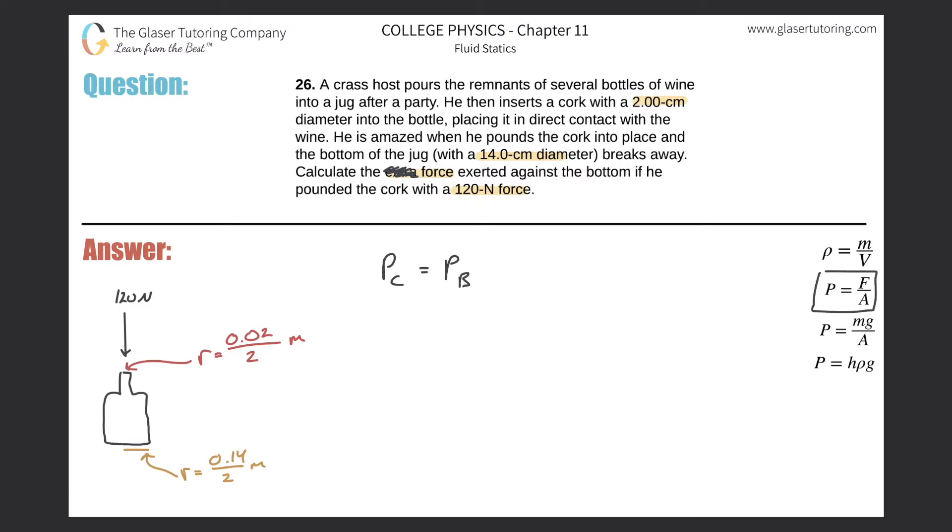Since I know pressure equals force times area, I'm going to substitute. Force of the cork over area of the cork will equal force at the bottom of the jug divided by the area of the bottom. We're asked to find the force against the bottom, so I'm after this variable. Simply do a cross multiplication.